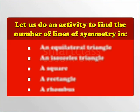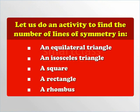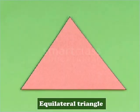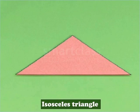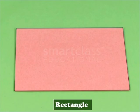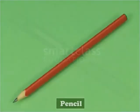Let us do an activity to find the number of lines of symmetry in an equilateral triangle, an isosceles triangle, a square, a rectangle, and a rhombus. For the activity, we need cutouts of an equilateral triangle, an isosceles triangle, a square, a rectangle, and a rhombus, as well as a ruler and a pencil.